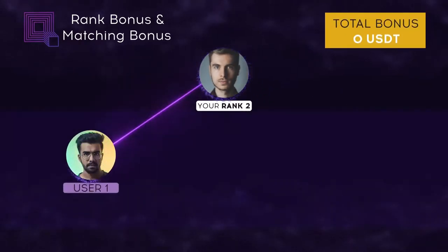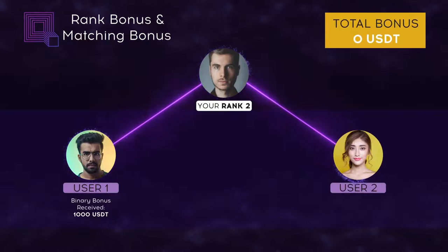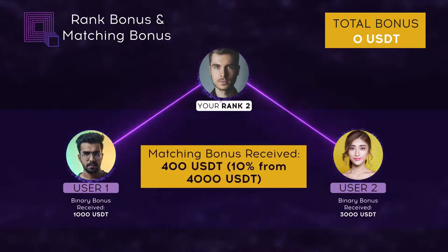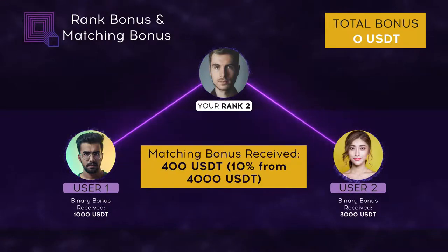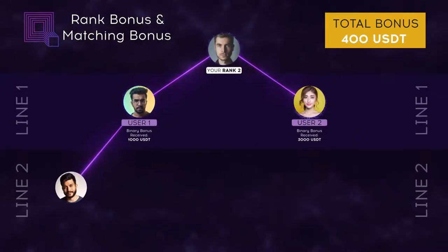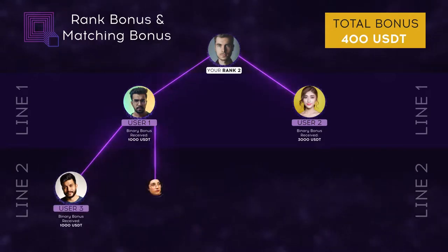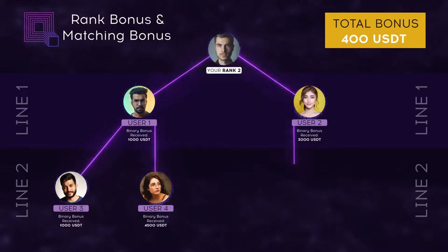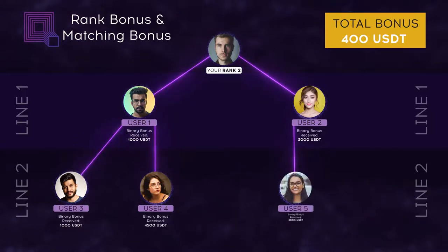The matching bonus comes as a percentage from binary bonuses received by your partners. The number of lines available for receiving matching bonuses is based on your current career rank and can be a maximum of 10 lines in depth. The matching bonus allows Qubit Tech affiliate users to build an additional source of long-term benefits within the affiliate program.